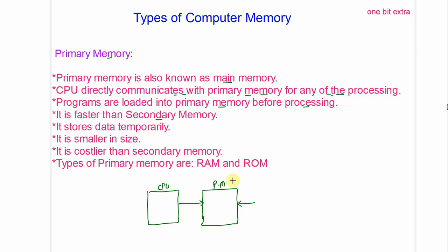Primary memory is faster than secondary memory. It stores data temporarily — when work is finished, the data is deleted and new data is stored. It is smaller in size and it is costlier than secondary memory because it is fast. Types of primary memory are RAM and ROM.